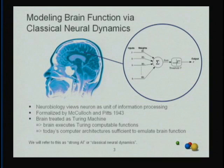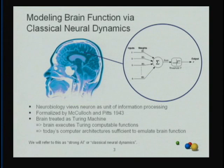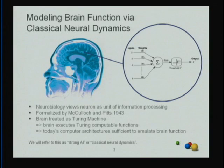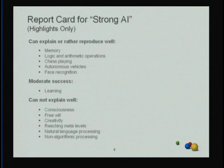McCulloch and Pitts modeled the neuron as a unit that creates a weighted sum. All electrical inputs from other neurons are weighted by synaptic strengths and summed up, then compared to a threshold. If the accumulated signal exceeds the threshold, it fires and the signal travels to other neurons. By doing this you essentially treat the brain as a Turing machine, meaning it executes Turing-computable functions, and today's computers are in principle sufficient to emulate brain function. Going forward I will call this classical neural dynamics, or the strong AI hypothesis, interchangeably.